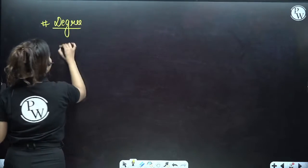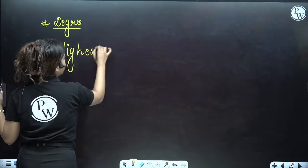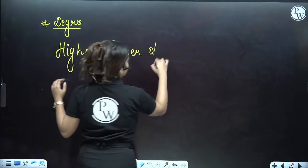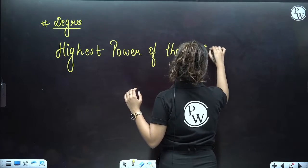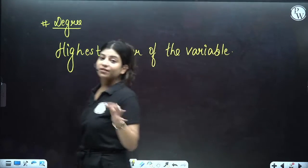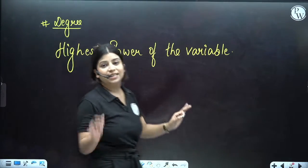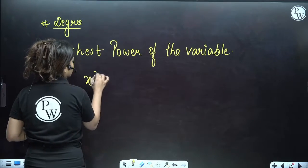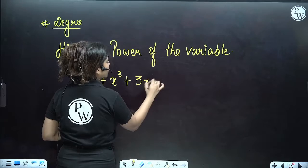For example, if we have x² + x³ + 3x⁴, the powers of the variable are 2, 3, and 4. The highest among these is 4, so the degree of this polynomial is 4.